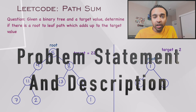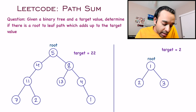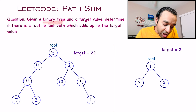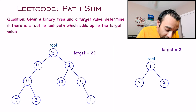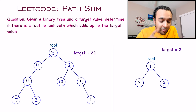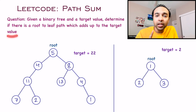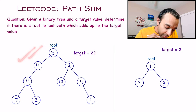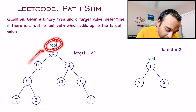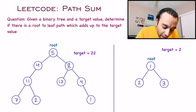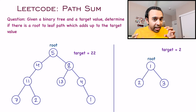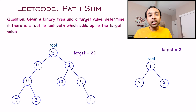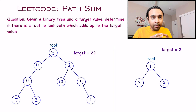Let us make sure that we are understanding the problem statement correctly. In this problem, you are given a binary tree and some target value, and you have to determine if there is a root to leaf path which, when you add up, equals the target value. You need to determine if there is a path from the root to any of the leaf nodes that, when added up, gives you 22.